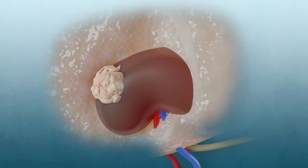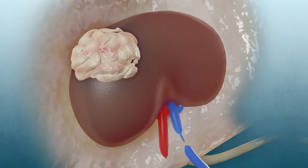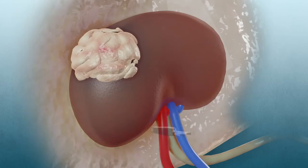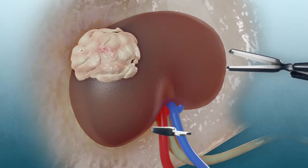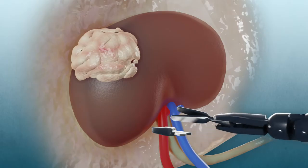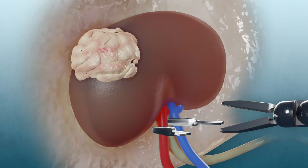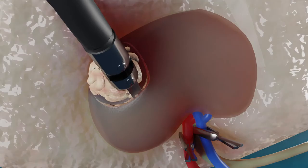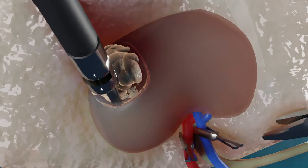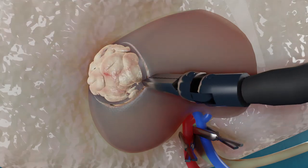With the use of diagnostic scans taken prior to the surgery, the surgeon looks for the tumor in your kidney. When needed, the surgeon will clamp the kidney's artery to stop the blood flow to the kidney and the tumor. This reduces the bleeding when the tumor is removed.